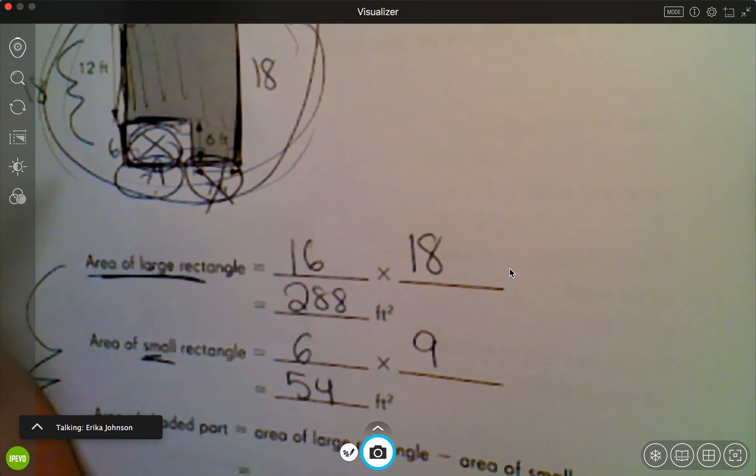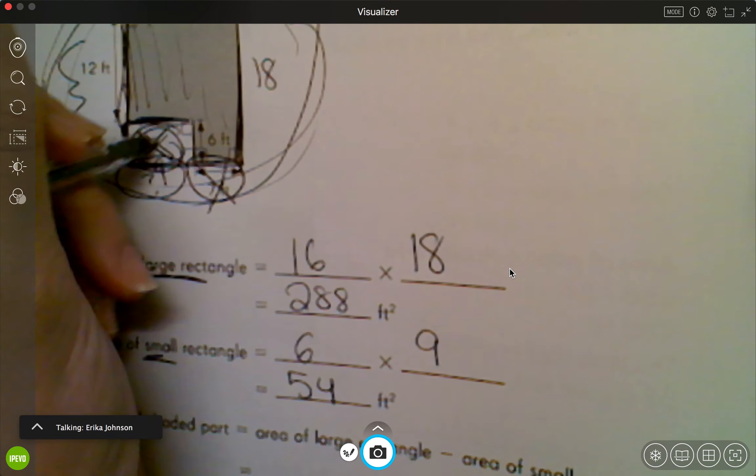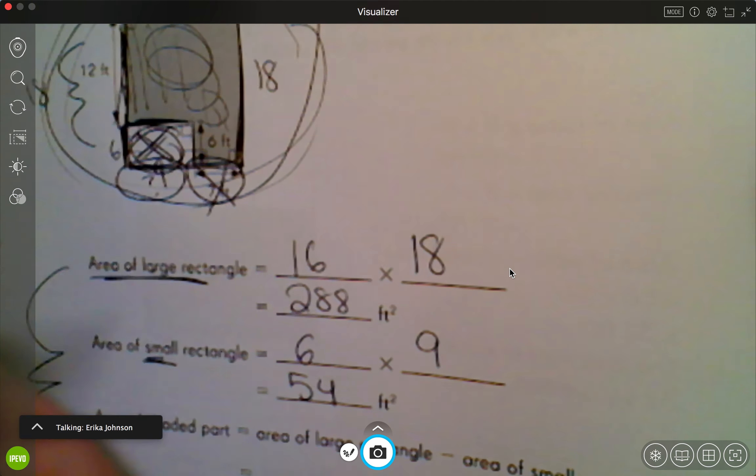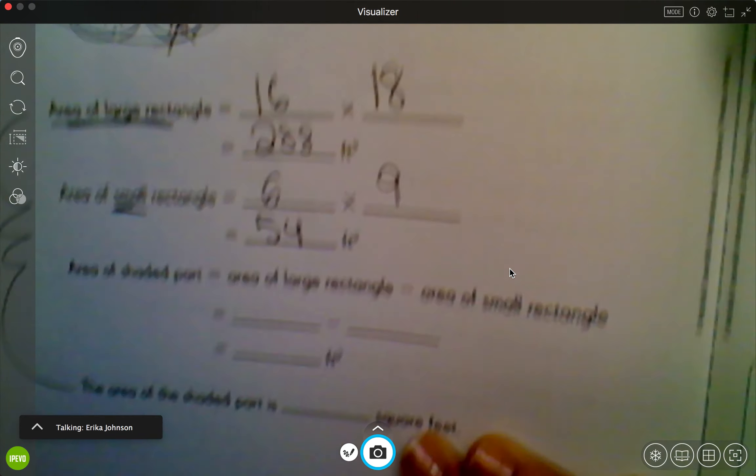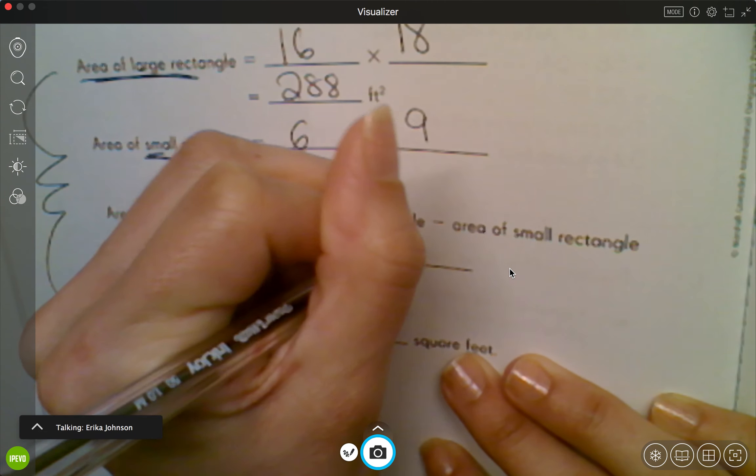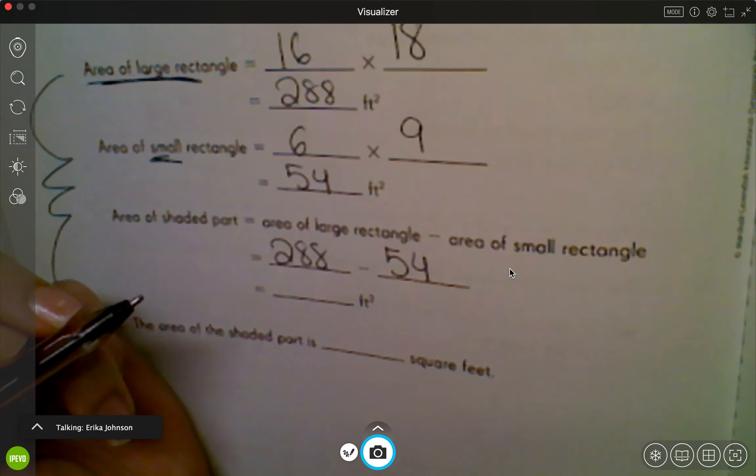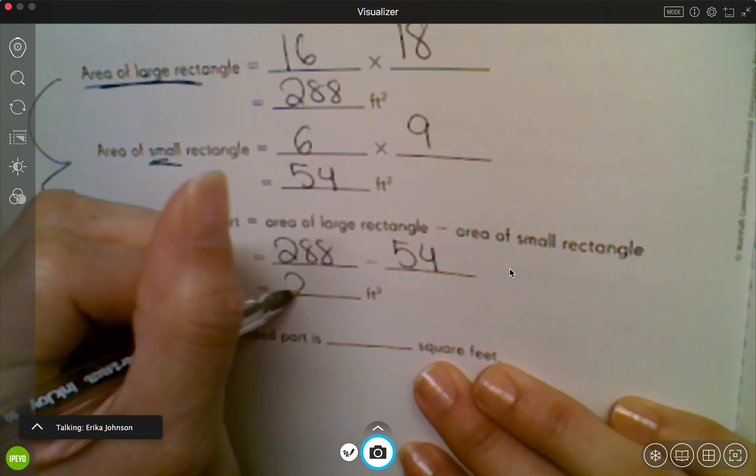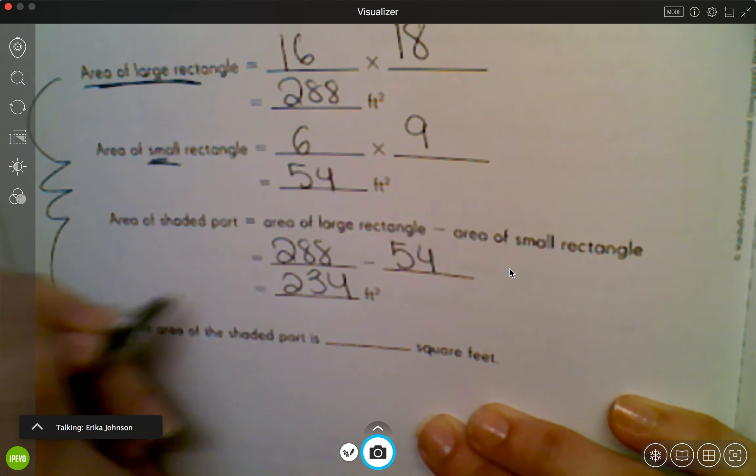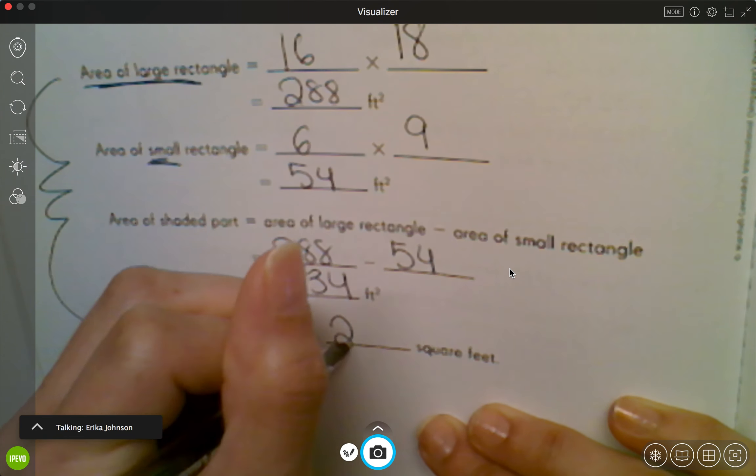So what I'm gonna do then is I want to get rid of this small piece so that I can figure out how much is left in this shaded part right here. So I'm gonna do my whole thing, 288, I'm gonna get rid of the 54, and I'm gonna actually subtract 288 minus 54, and I get to 234. So the shaded area of the shaded part is 234 square feet.